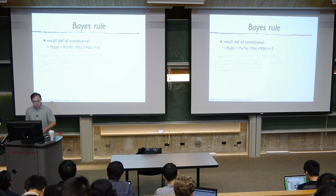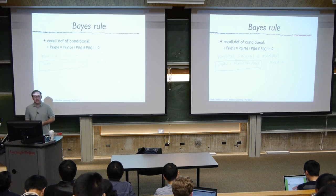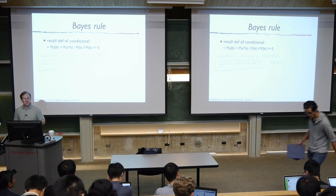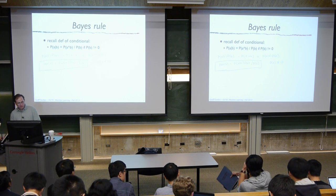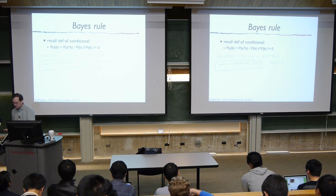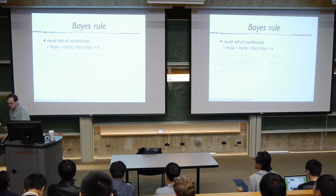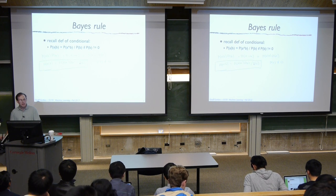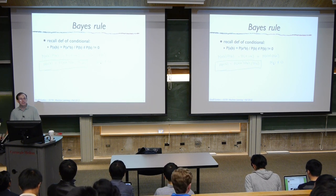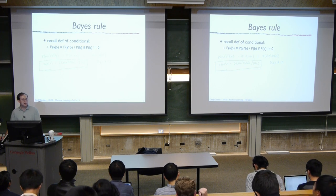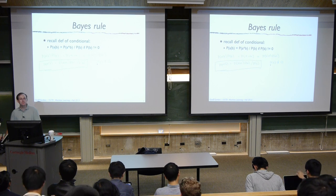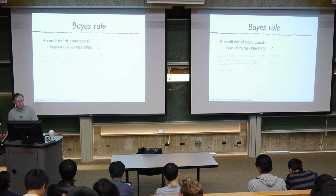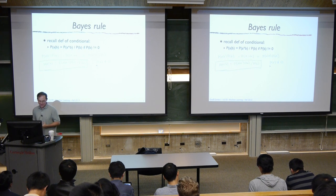Let's get back to Bayes rule. At the end of class last time, I proved Bayes rule — it's all downhill from there. So we have P of A given B equals P of B given A times P of A divided by P of B, so long as P of B isn't zero. As long as you condition only on things you might observe, you're doing machine learning. If you condition on things impossible to observe, that's something else.